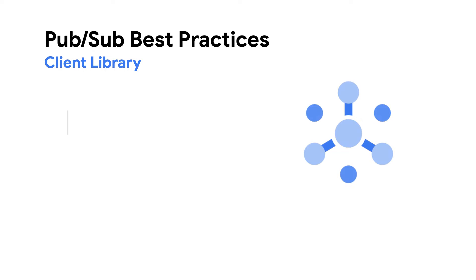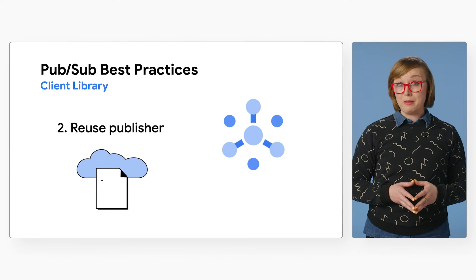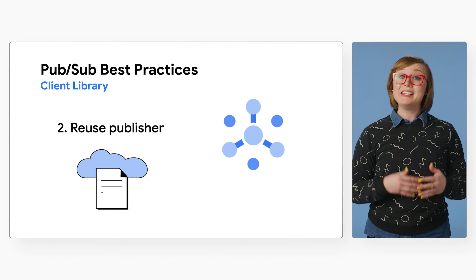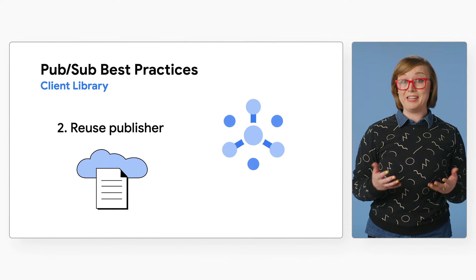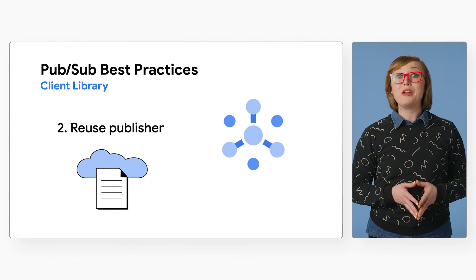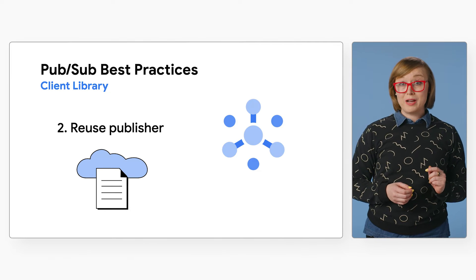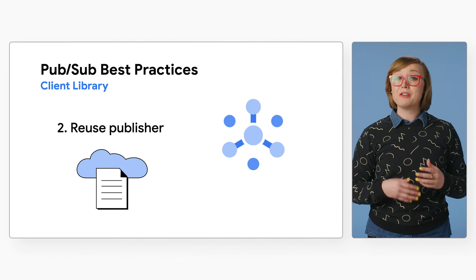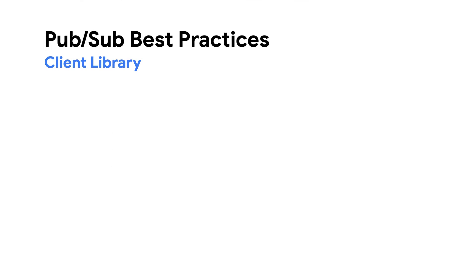Number two: reuse publisher. Reuse the same publisher client instead of recreating new publisher clients to avoid cold start problems. The first publish request takes longer than subsequent requests.